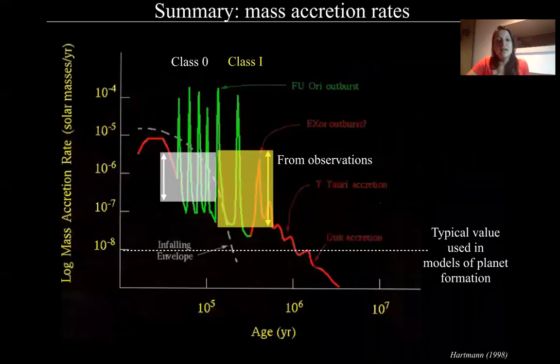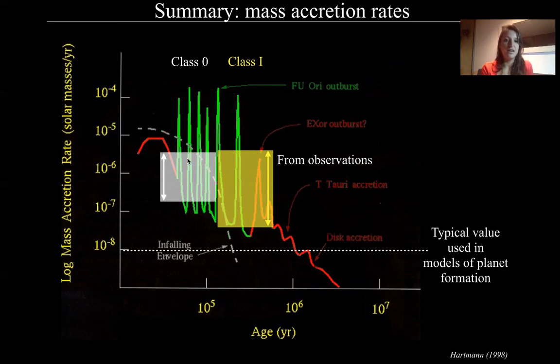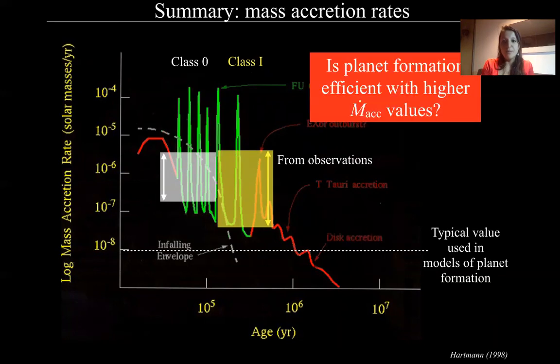And now if I go back to this theoretical plot, I put the observations now of Class 0 and Class 1 sources that lie in this range. This is what we observe and also from data from the literature. And the thing is that this is the typical value used in models of planet formation. And the question now will be, is planet formation efficient with higher mass accretion rate values, the ones that we find in this range? For example, for Class 1 sources and earlier in Class 0 sources in this range. Of course, this needs more observations, but this is the ranges that we find with this work.